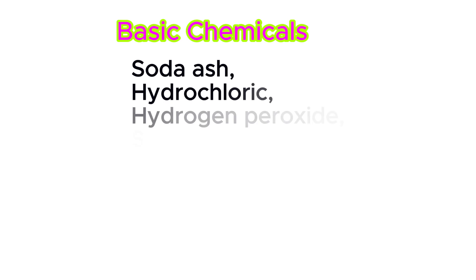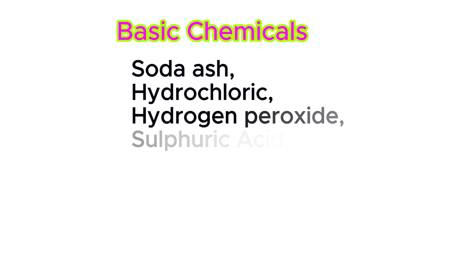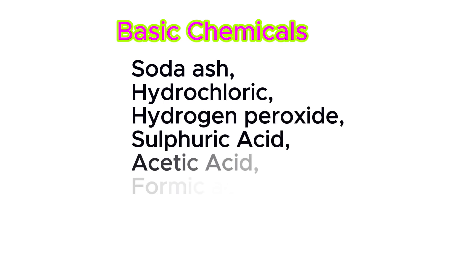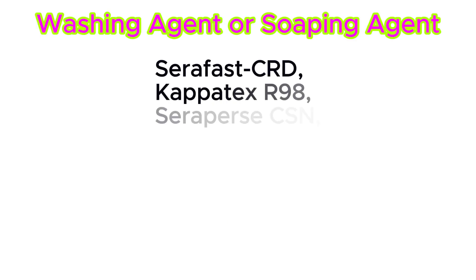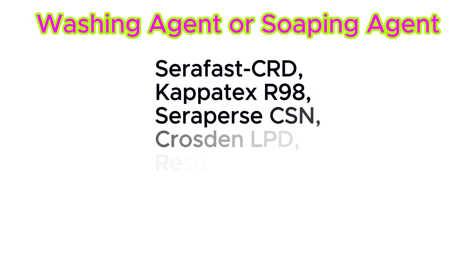Types of chemicals used in the textile industry. Basic chemicals: Soda ash, hydrochloric acid, hydrogen peroxide, sulfuric acid, acetic acid, formic acid, caustic soda.